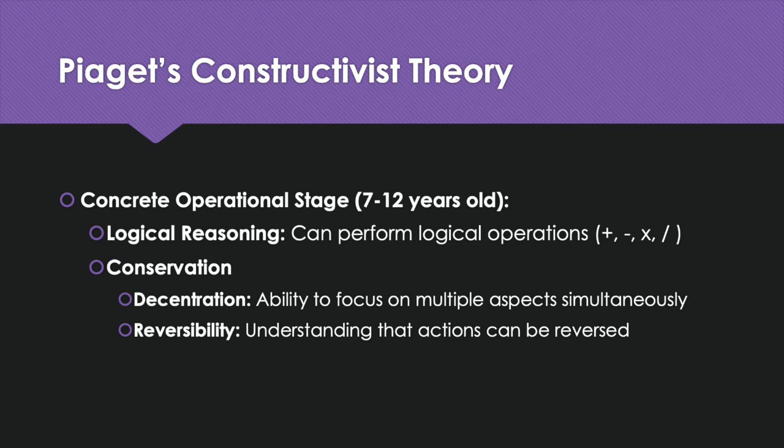Seven to twelve year olds in the concrete operational stage do have these abilities. First, they have logical reasoning and can perform calculations like addition, subtraction, multiplication, and division. They also have the ability to conserve, thanks to decentration — they can focus on multiple aspects of a situation or object at the same time. And they have reversibility, understanding that actions can be reversed, like pouring the glass of water back into the same cup.